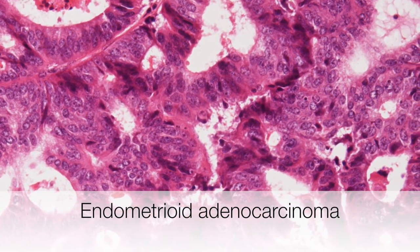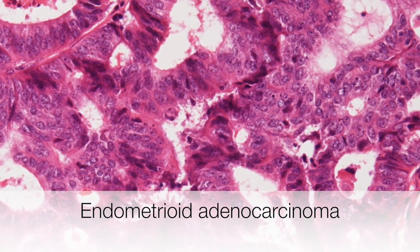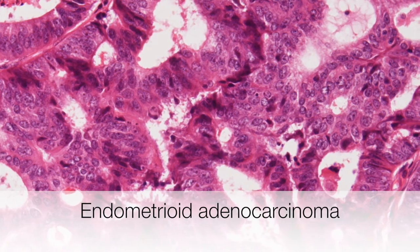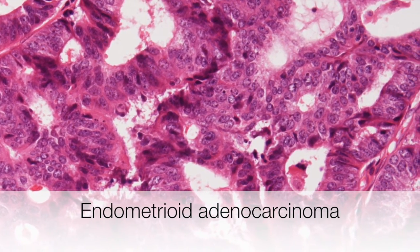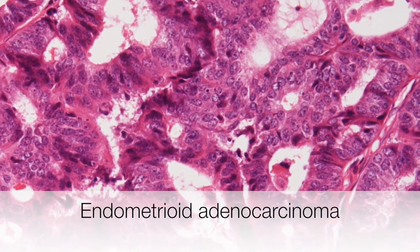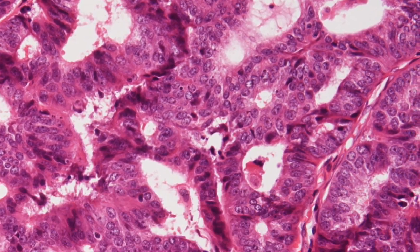Endometrioid adenocarcinomas are graded 1, 2 or 3, with grade 1 being better differentiated and less aggressive than grade 3.